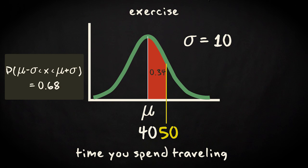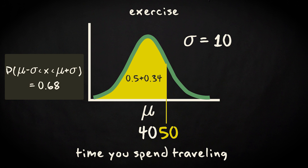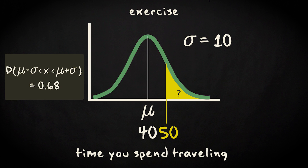So the probability to travel less than 50 minutes is 0.5 plus 0.34, 0.84. But you would like to know the complement, the probability to travel more than 50 minutes. This is 1 minus 0.84, which is 0.84.